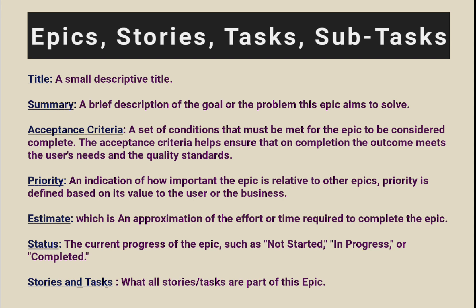Priority: an indication of how important the epic is relative to other epics. Priority is defined based on its value to the user or business. Estimate: an approximation of the effort or time required to complete the epic. Status: the current progress of the epic, such as not started, in progress, or completed.